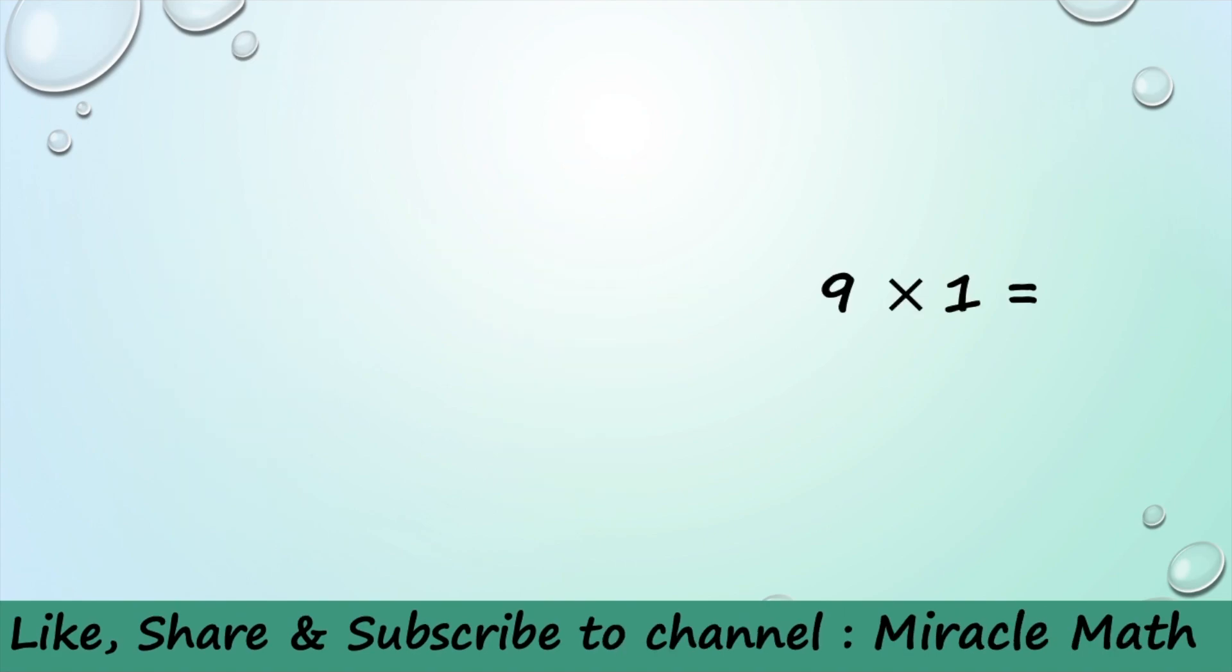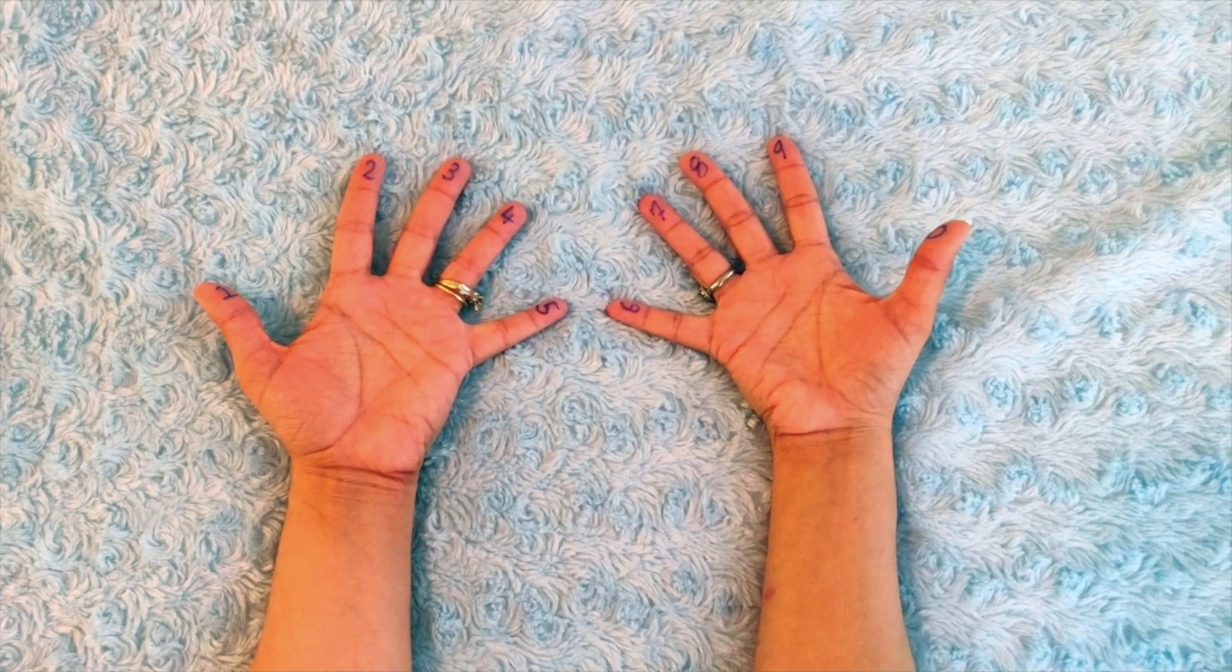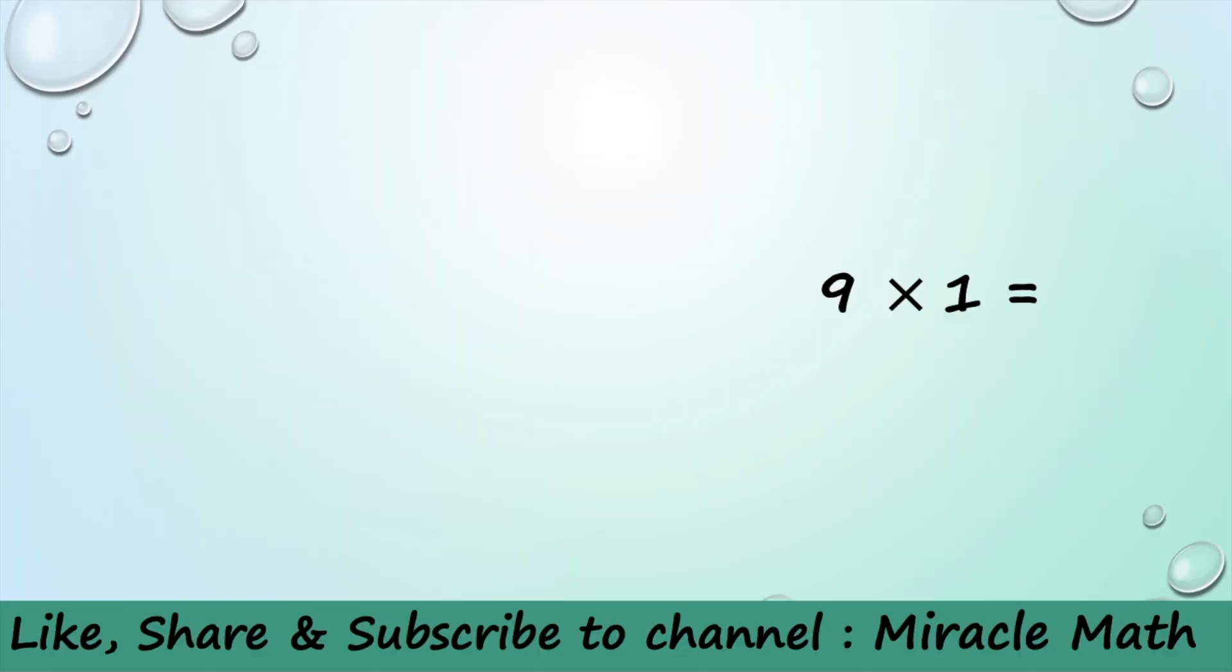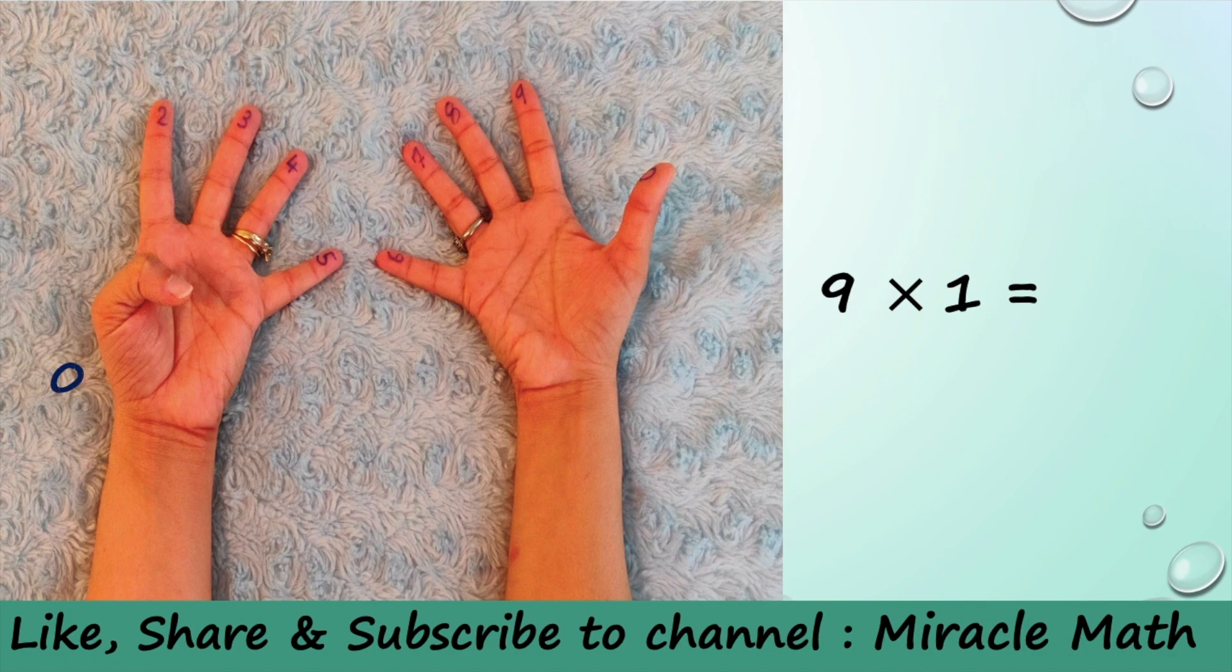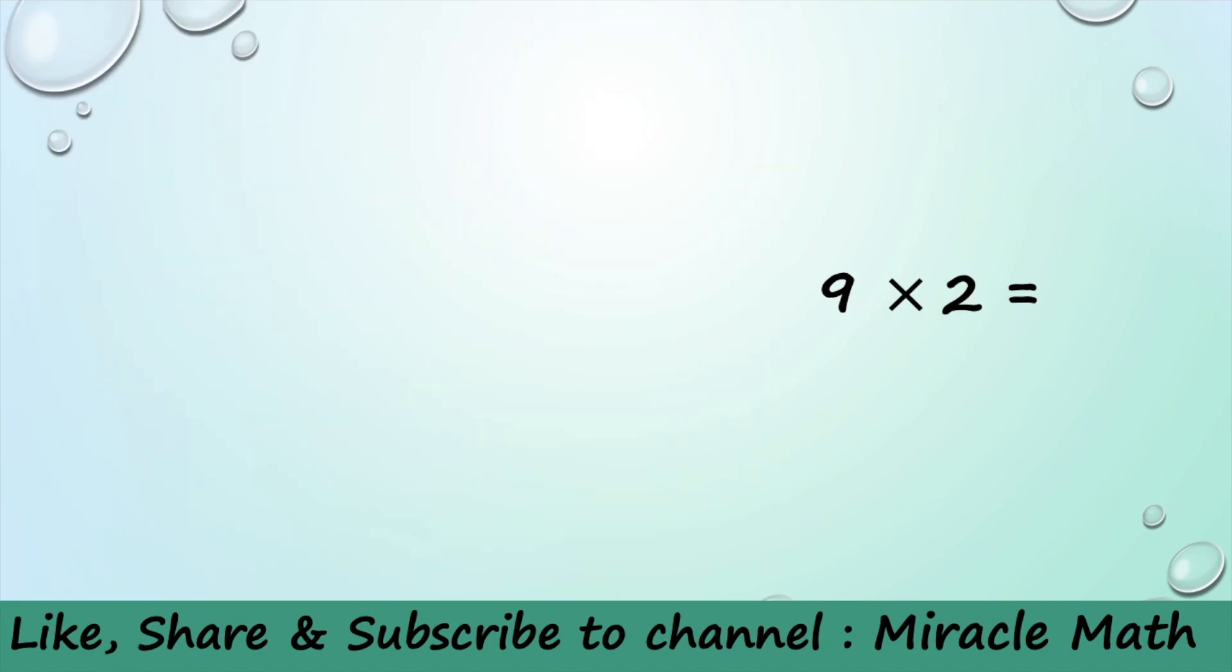Let's see an example: 9 times 1. For this example we are going to bend finger 1. So now you have no fingers before finger 1 and 9 fingers after finger 1, so the answer is 9. Let's try 9 times 2. Put the second finger down so that you have one finger before the second finger and 8 fingers after, so the answer is 18.